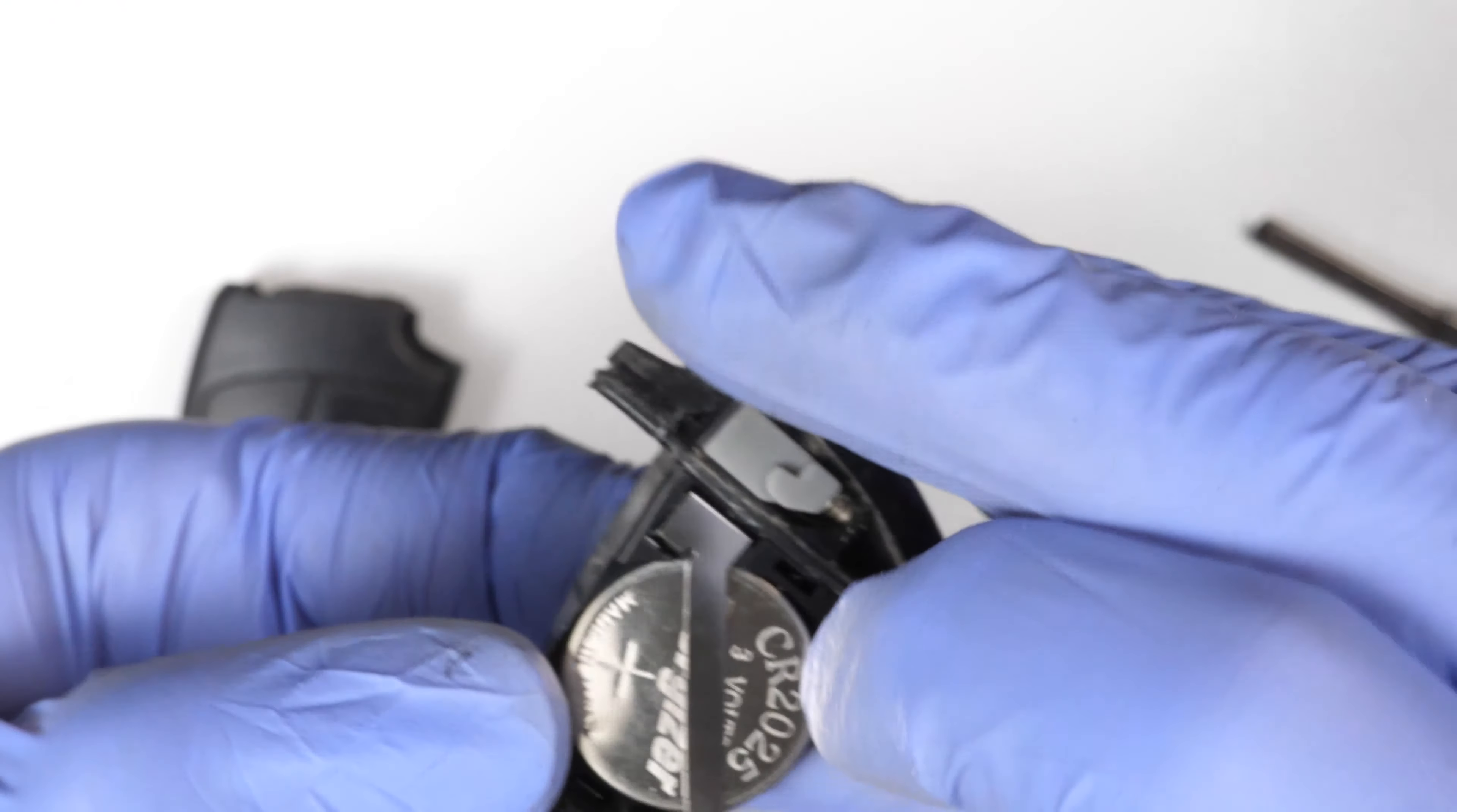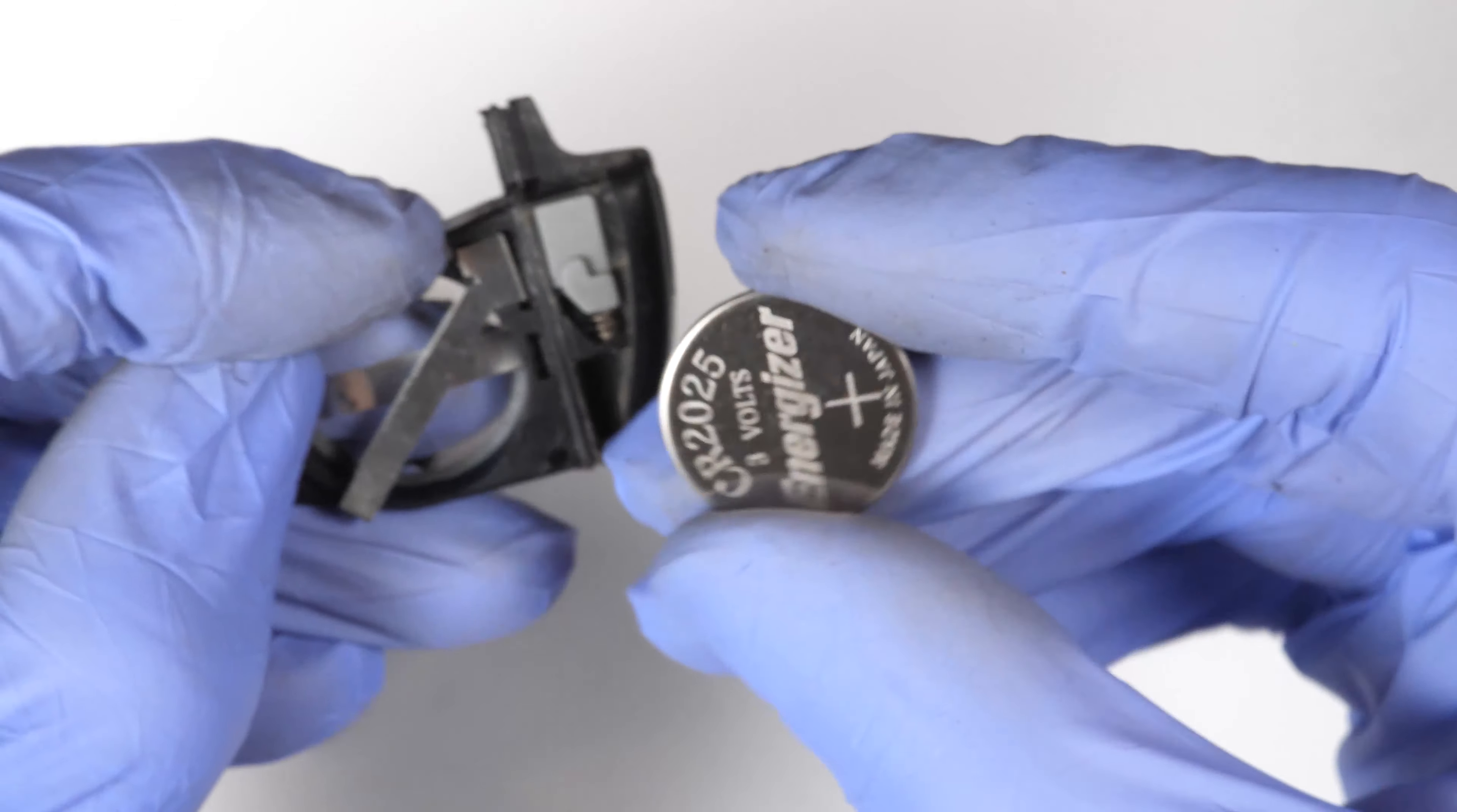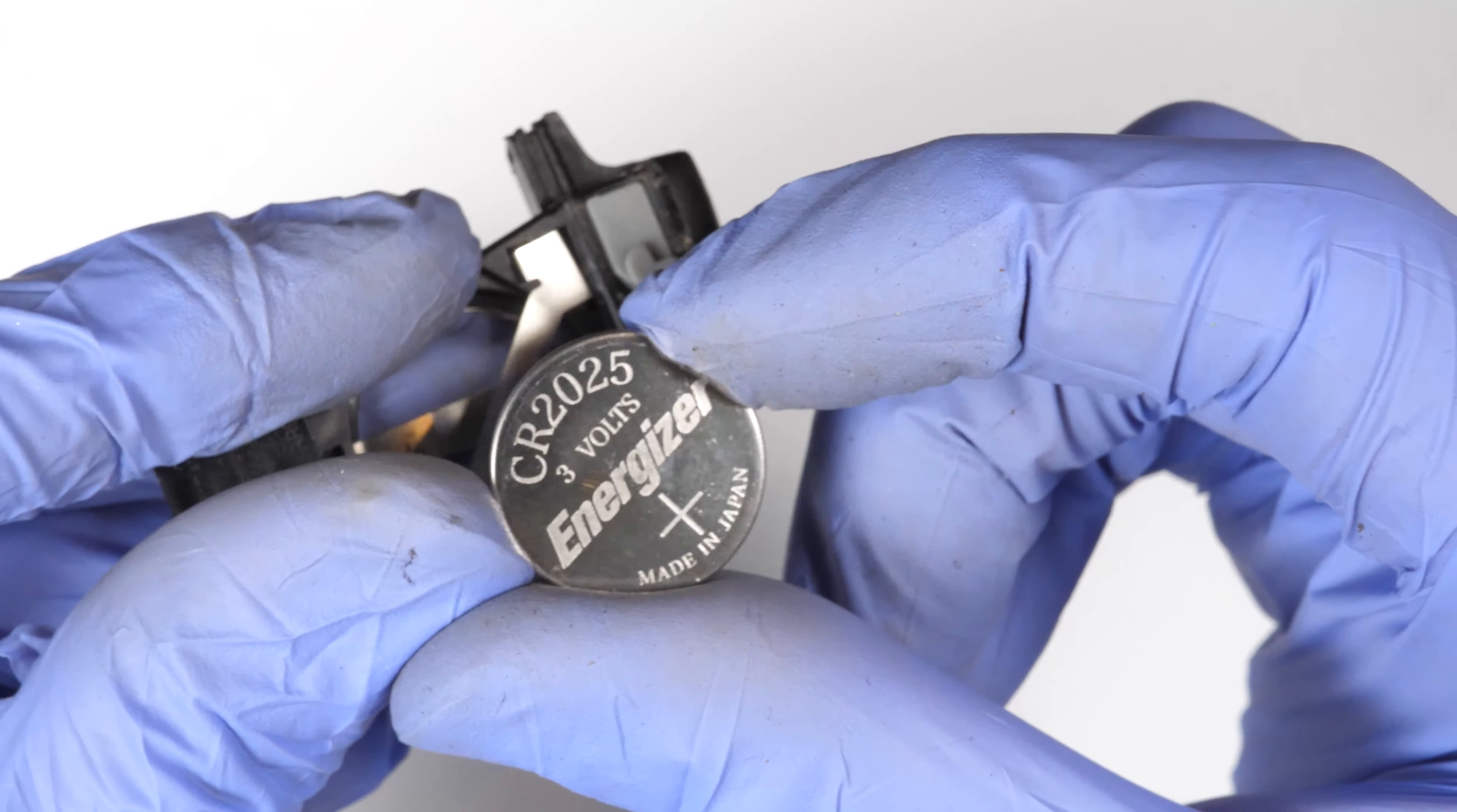So you take one. There's the other one. You can tilt it to let it out. So this key fob takes a battery that is a CR2025 3V. It takes two of them.